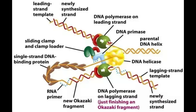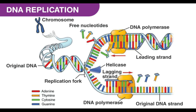Another feature of DNA polymerase 3 is that it can add nucleotides only to the 3' end of the DNA strand. This means that replication always proceeds in the 5' to 3' direction on the growing DNA strand. Because the two parental strands of the DNA molecule are antiparallel, the new strands are oriented in opposite directions.